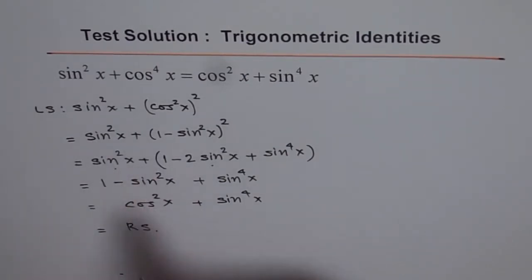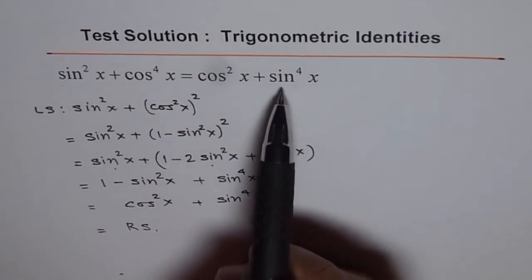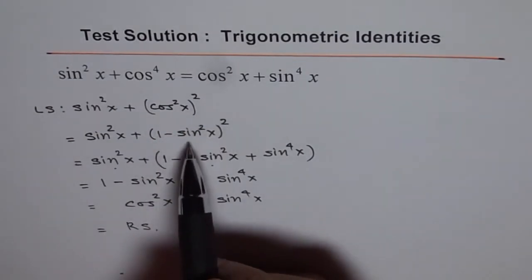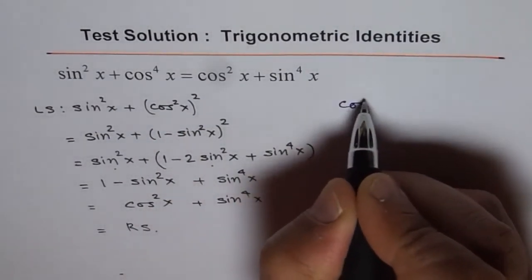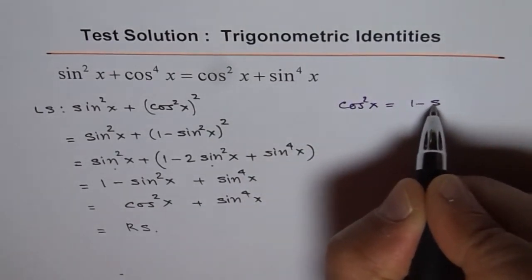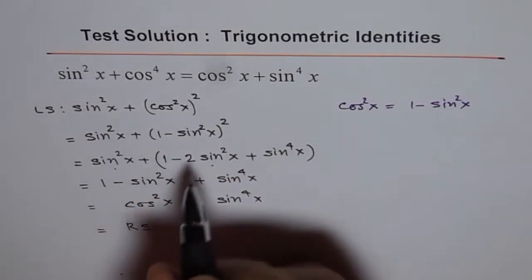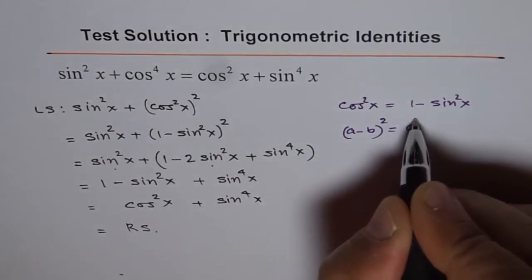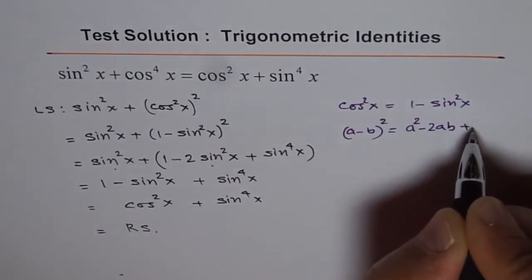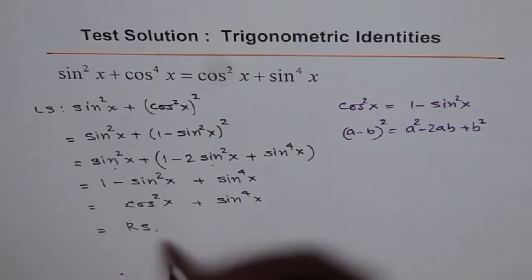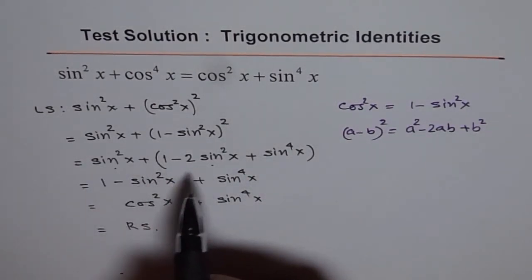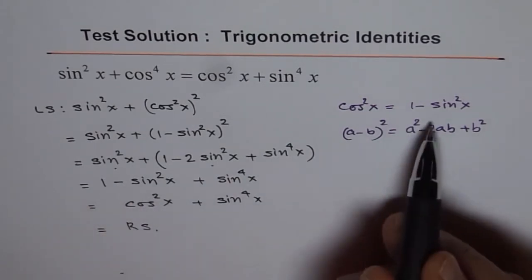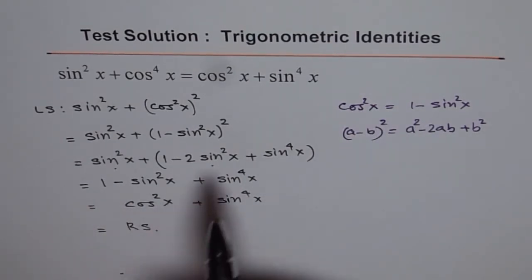Let's review what we did. Since we wanted sine to the power of 4x, we started with cos to the power of 4x and squared it. We used cos squared x equals 1 minus sine squared x, squared it using a minus b whole square equals a squared minus 2ab plus b squared, expanded it, and combined sine squared x minus 2 sine squared x to get minus sine squared x. Then 1 minus sine squared x gave us cos squared x, completing the right side.